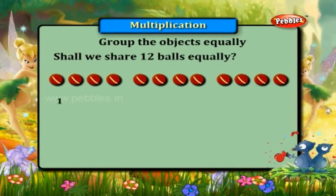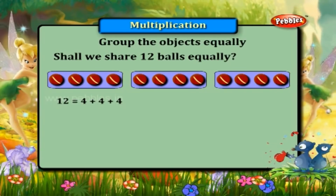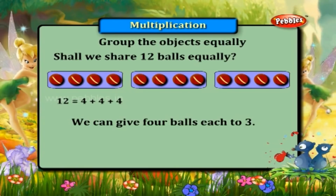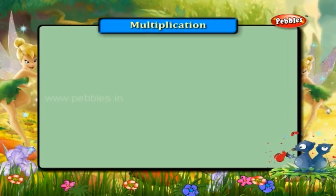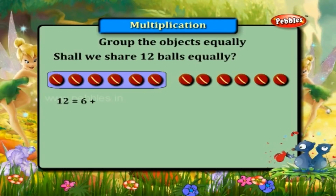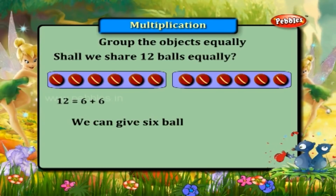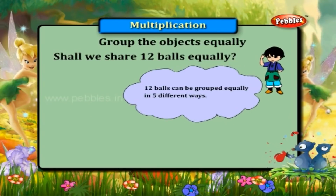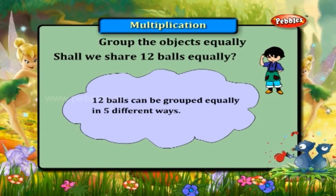Twelve is equal to four plus four plus four — we can give four balls each to three, that is four into three times. Twelve is equal to six plus six — we can give six balls each to two, that is six into two times. Twelve balls can be grouped equally in five different ways.